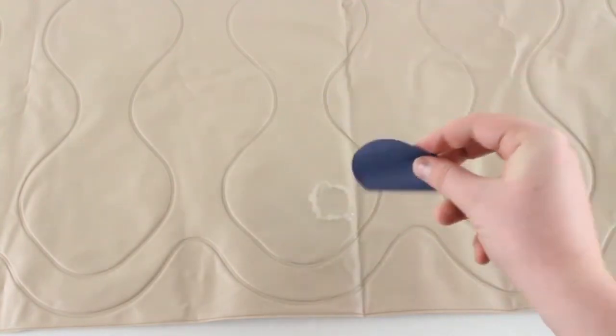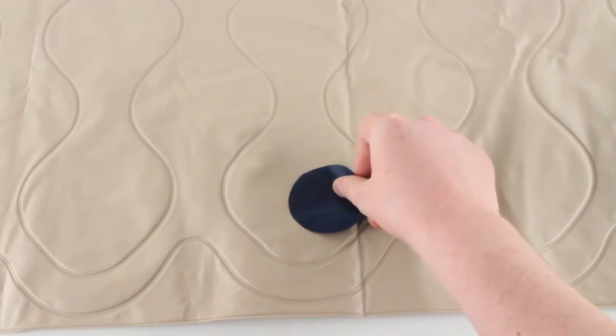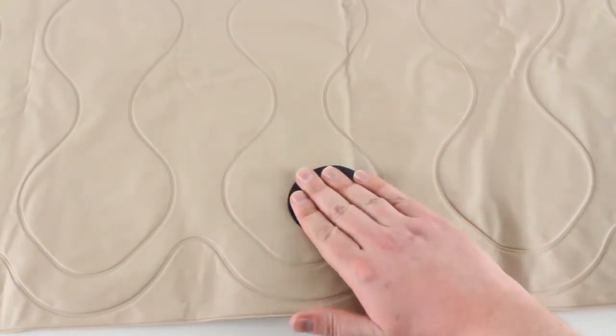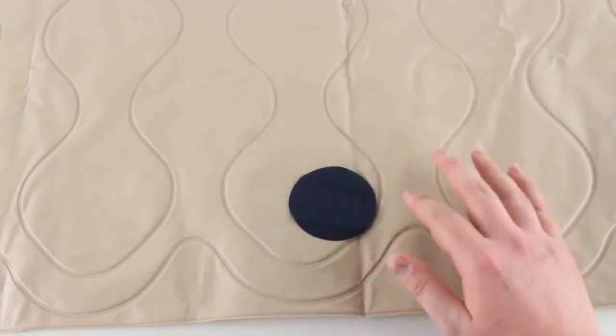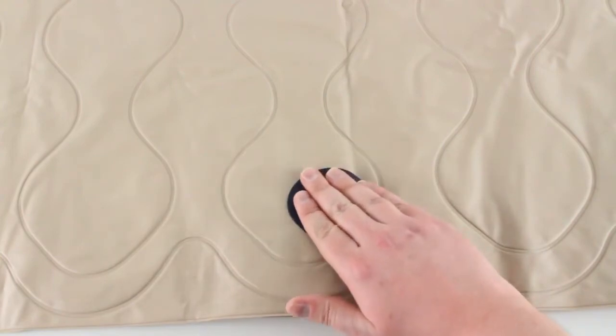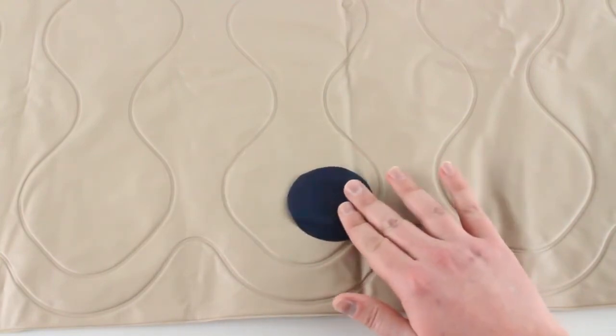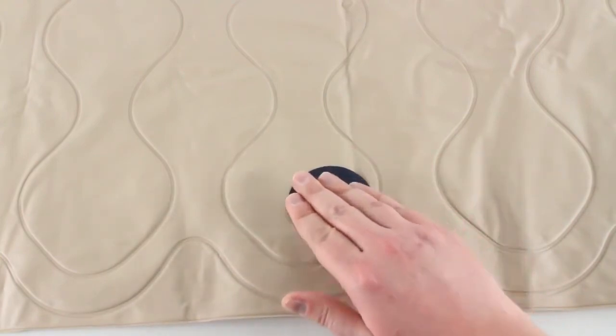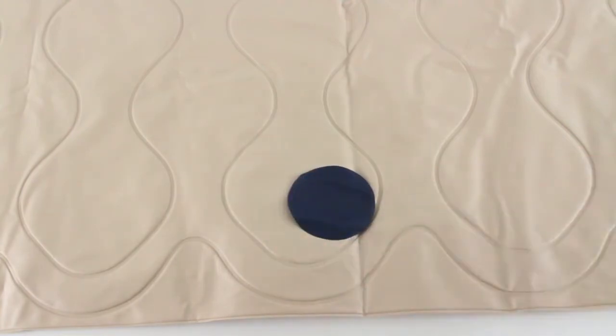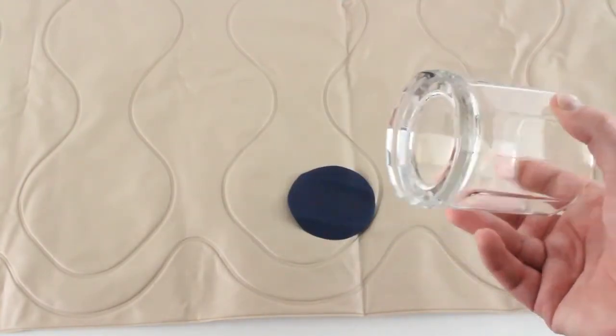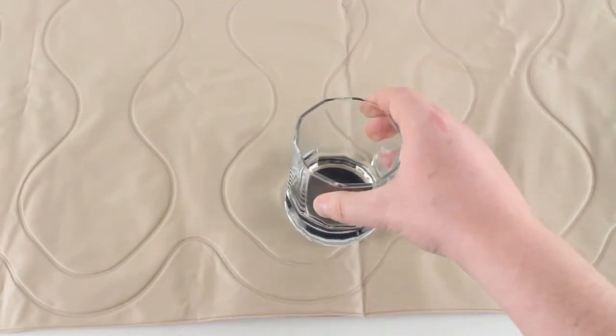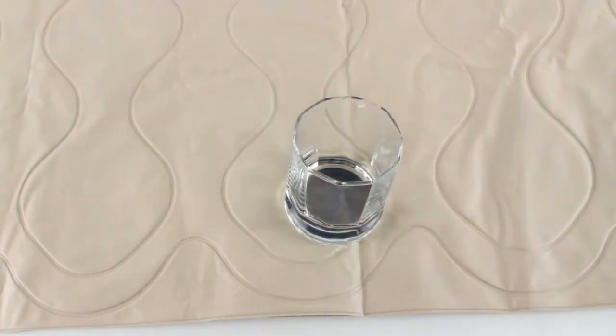And then take that patch, shiny side down, lay it right down over the patch or over the hole. You want to make sure it gets a good seal, but you don't want to squeeze it too hard and push the glue in. Get something moderately heavy. I just got this drinking glass here. Set it down on the patch. Leave that there.